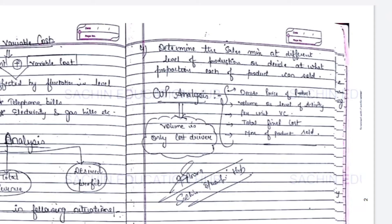Our fourth point is determining the sales mix at different levels of production — deciding what proportion of sales goes where. CVP analysis, by considering all types of costs, profit, and volume as a cost driver, helps in determining the sales mix. The sales mix helps in dividing sales between different levels of departments. So CVP analysis helps determine our sales mix, making it easy for the manager to take decisions for future planning.